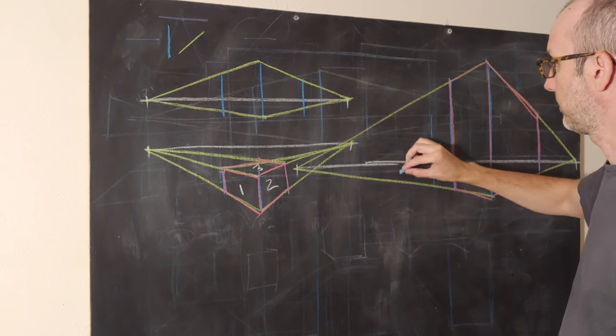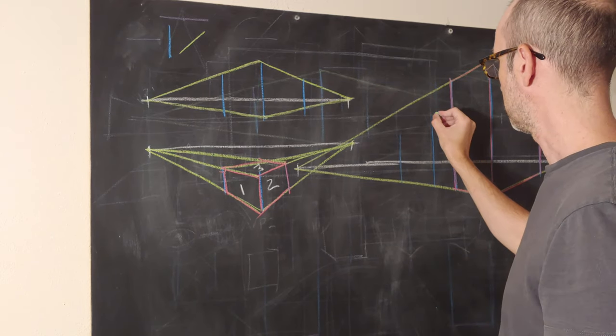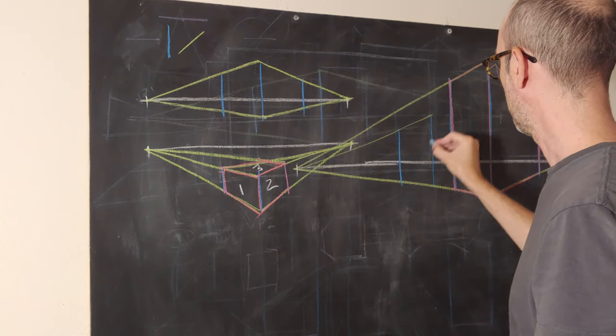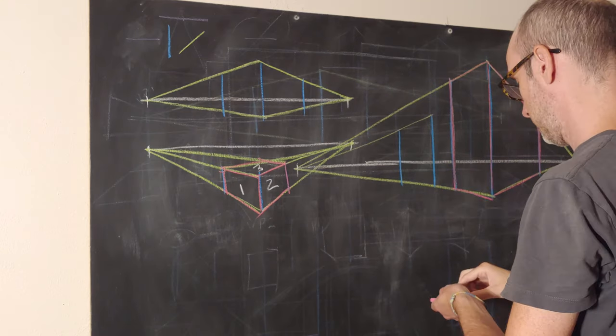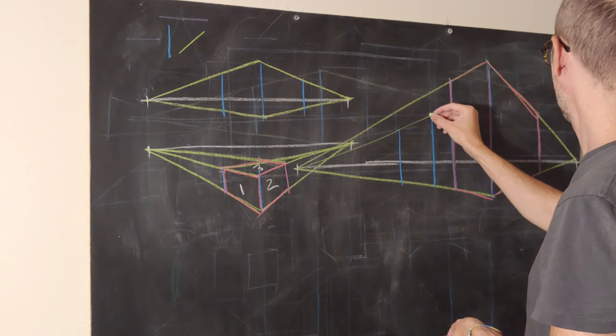So we'll put another building here. We'll send this building all the way back to the vanishing point. Cut it off there. Cut it off there.